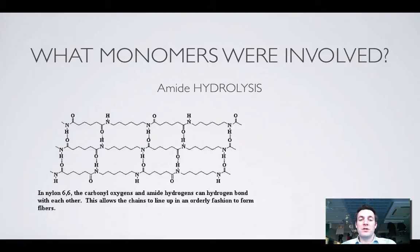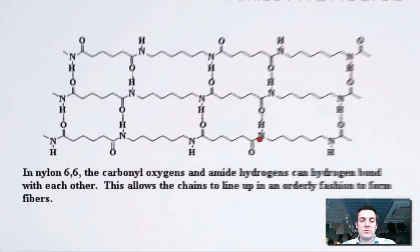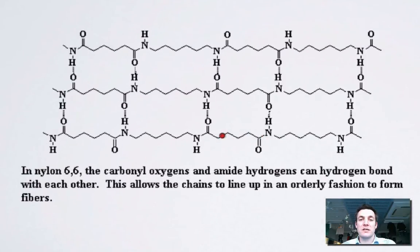The reverse problem is finding out what monomers were involved. This is amide hydrolysis, which is basically the same as ester hydrolysis except we're breaking an amide bond instead of an ester bond. We put OH back on the carboxylic acid and H back on the amine. This diagram shows nylon — nylon 6-6 — a very commonly used polyamide. These polyamides are often used as synthetic fibres and some are extremely strong, used in bulletproof jackets.